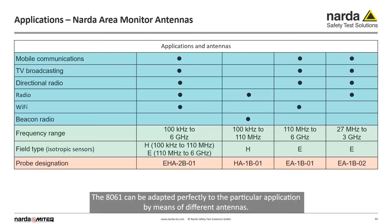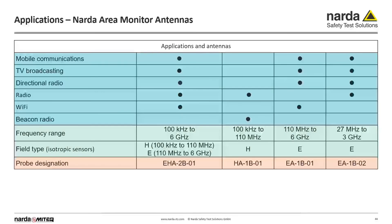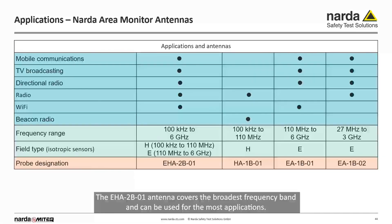The 8061 can be adapted perfectly to the particular application by means of different antennas. The EHA2BO0 antenna covers the broadest frequency band and can be used for most applications.